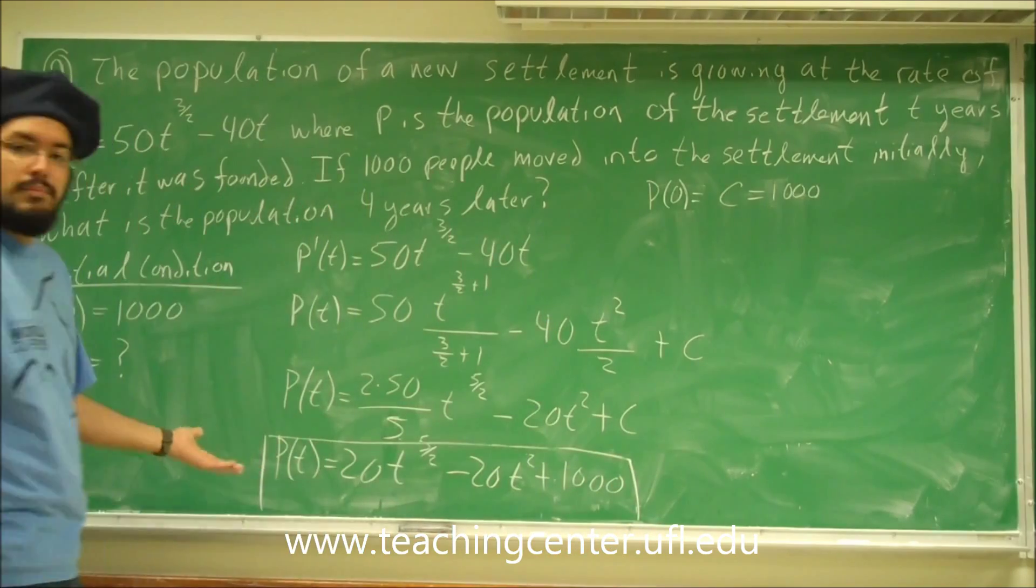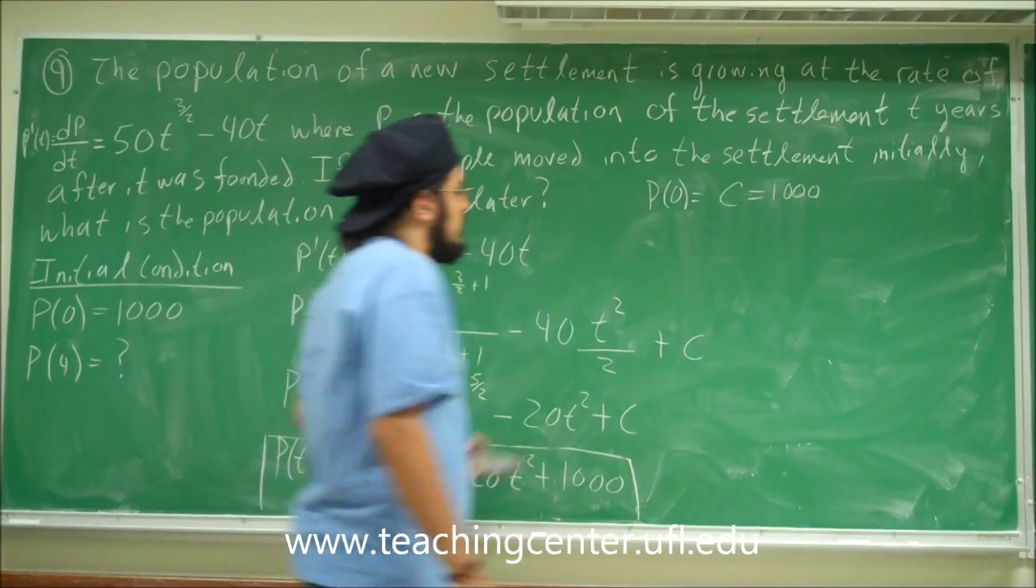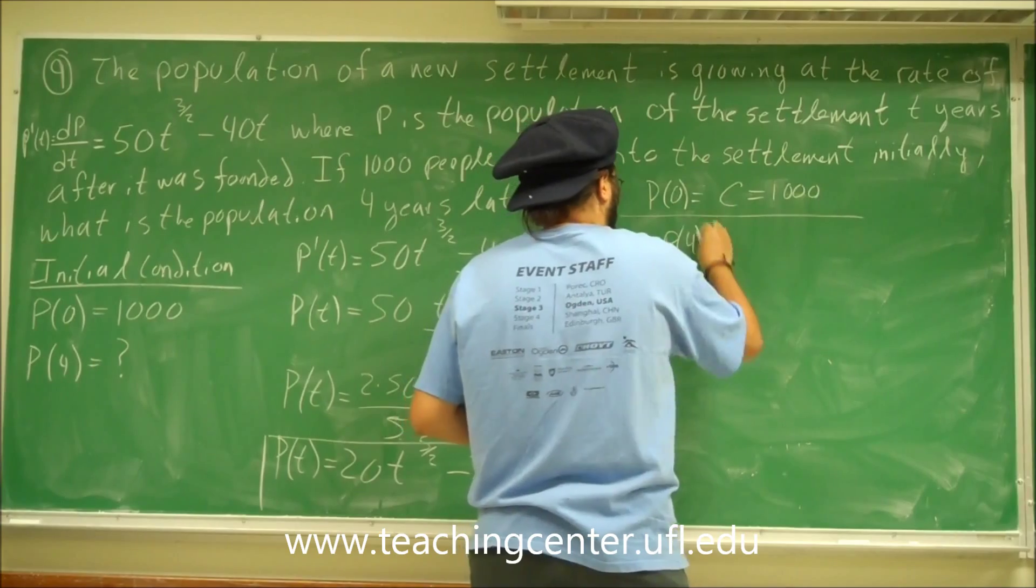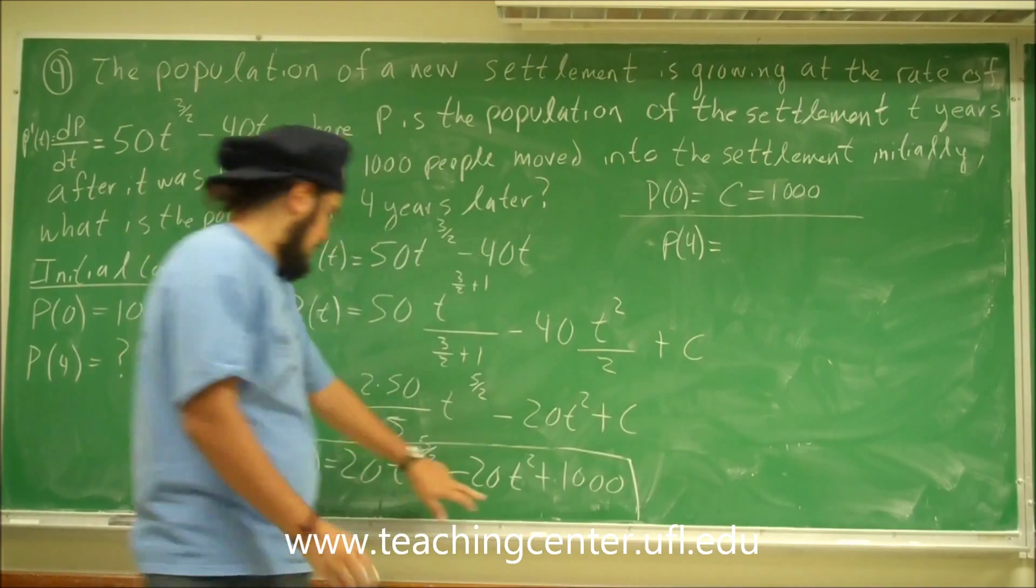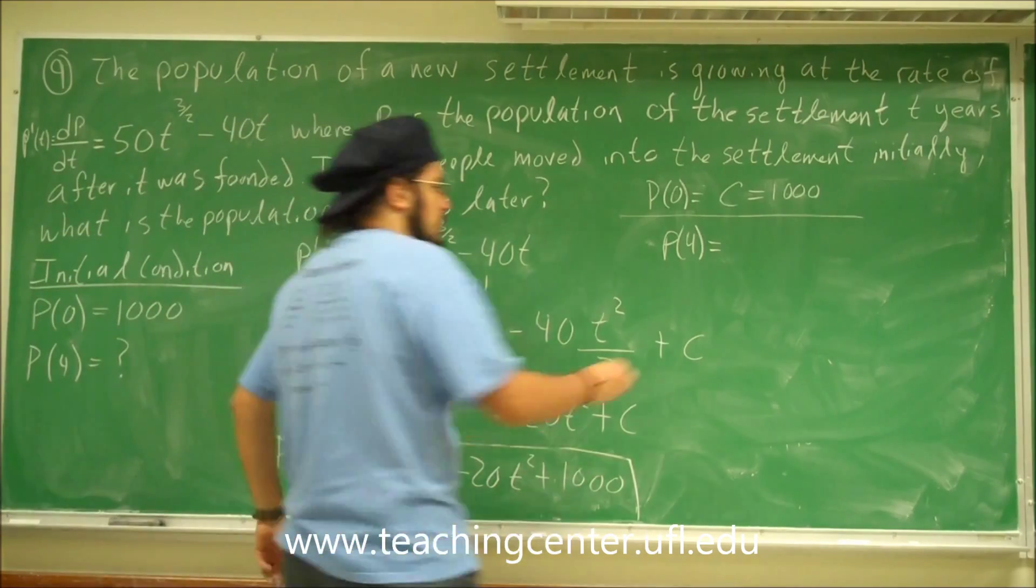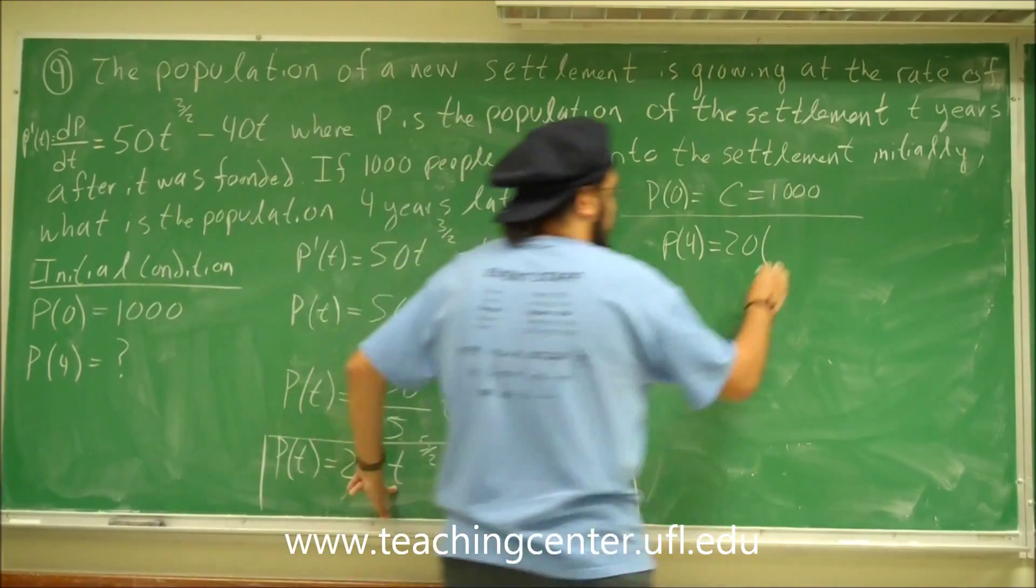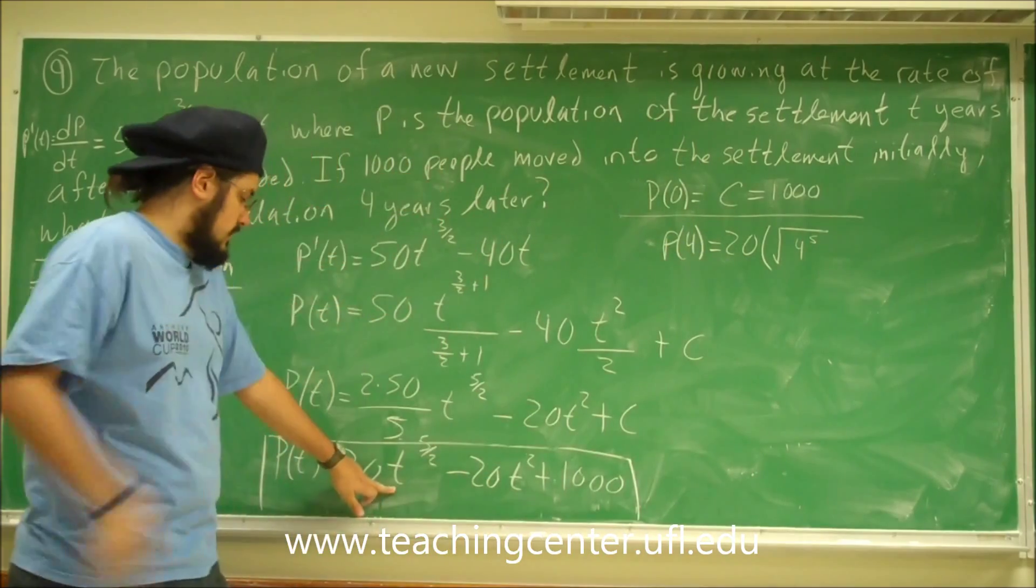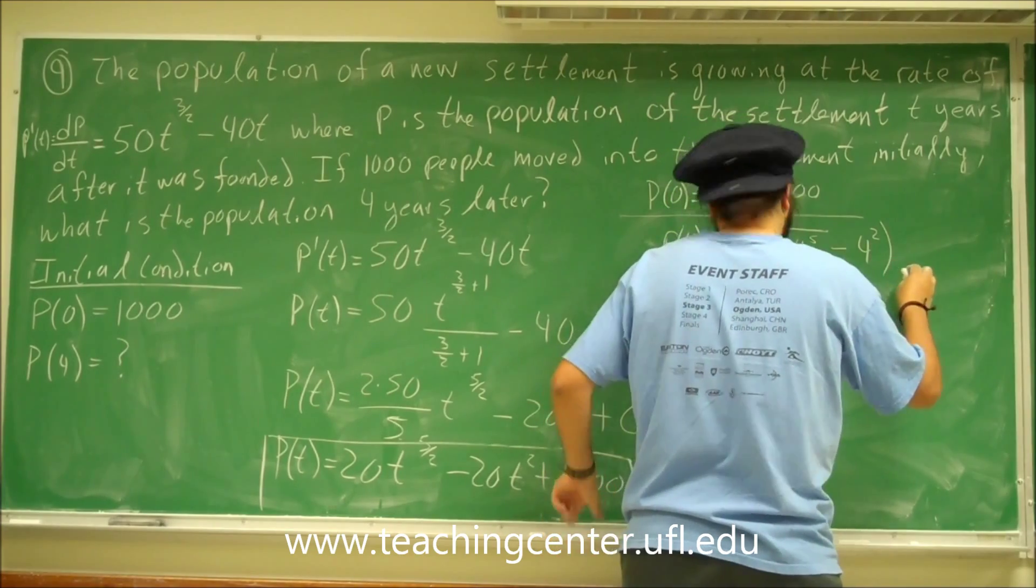Alright, so now we have the function p(t). Now that we have function p(t), we can find out what the population was after 4 years. So now let's find p(4). That's going to be, well we have 20 and 20. Let's factor out the 20 to help us simplify this. And then we have 4 to the 5 halves is the same thing as saying square root of 4 to the 5th, minus 4 squared, and then plus 1,000.